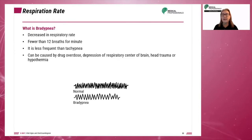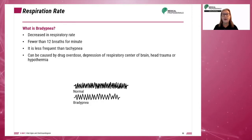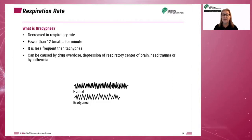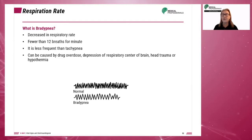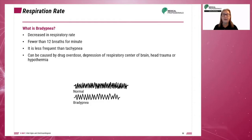Bradypnea is the term for the decrease in respiratory rate. It occurs when there are fewer than 12 breaths per minute. This condition is less frequent than tachypnea. It can be caused by drug overdose, depression of the respiratory center of the brain, head trauma, or hypothermia.